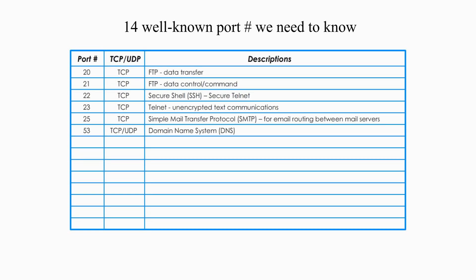Port 53 is for Domain Name System, DNS. Ports 67 and 68 are for Dynamic Host Configuration Protocol, DHCP — 67 is client to server and 68 is server to client. Port 69 is for Trivial FTP, or TFTP, a non-secure FTP.